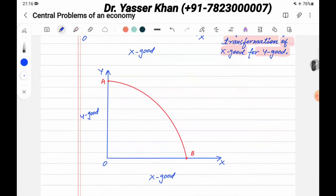I have given X axis to X good and Y axis to Y good, because I told you that the production possibility curve is a combination of two goods. Now, if any point is below the production possibility curve, what does this show us?